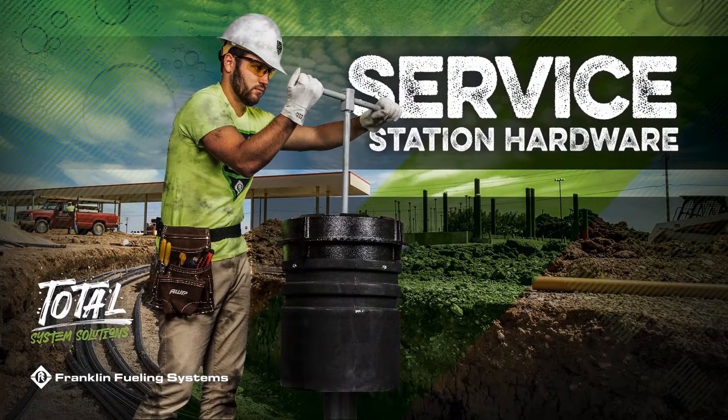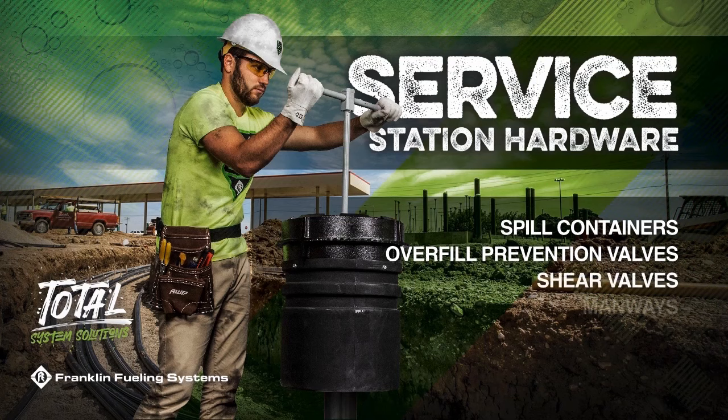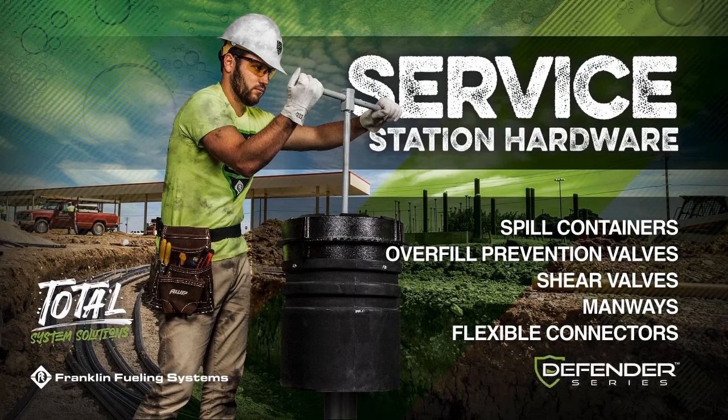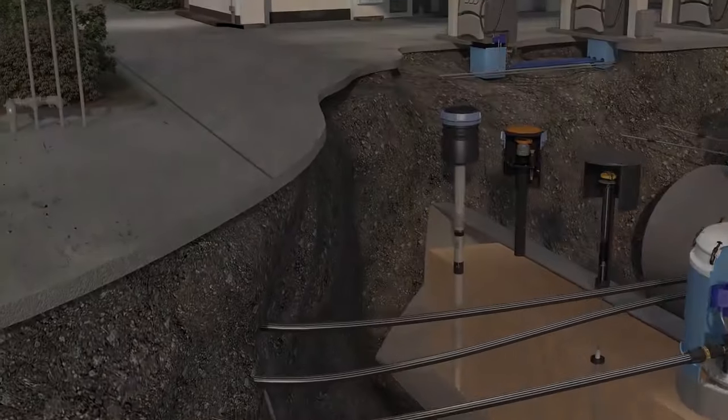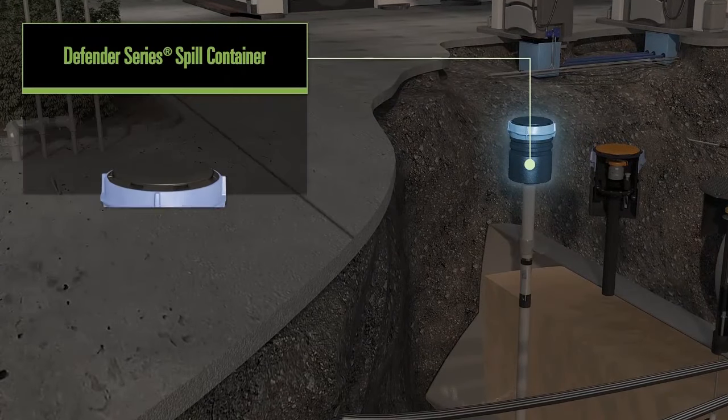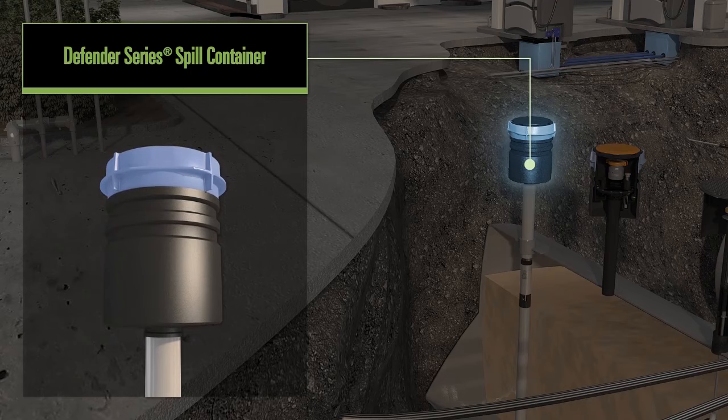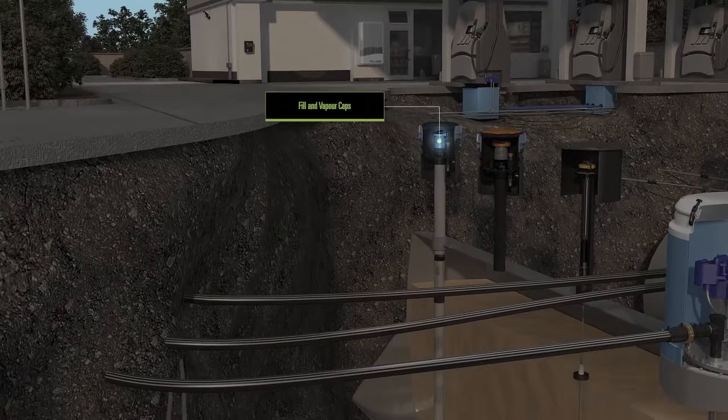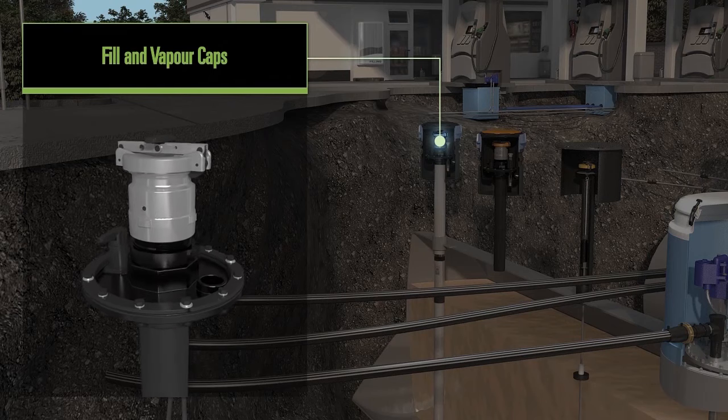Moving forward, service station hardware includes products that help safely manage the delivery of fuel into the tanks. When fuel is delivered to the underground tank, the fuel technician accesses the tank through the spill container. The technician then connects the delivery hose to the fill adapter inside the spill container.